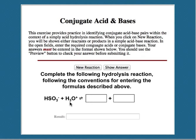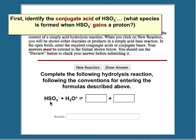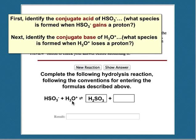One more example: hydrogen sulfite and hydronium. Hydronium is the Bronsted acid and hydrogen sulfite is our Bronsted base. When hydrogen sulfite accepts a proton, it will form its conjugate acid — sulfurous acid. When hydronium loses a proton, it will form its conjugate base, and that is water.